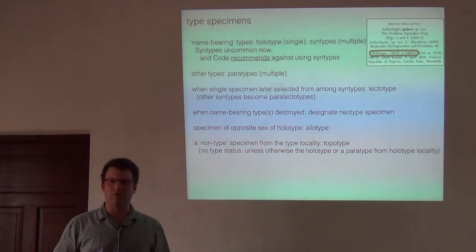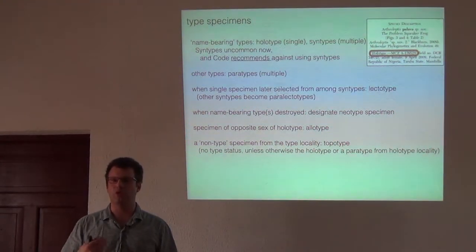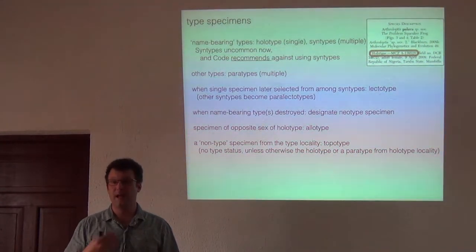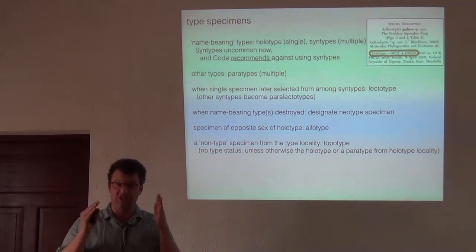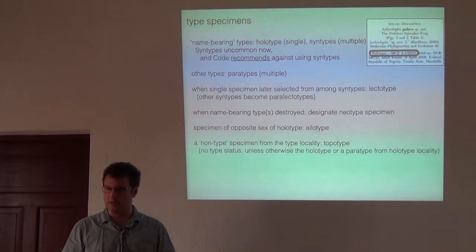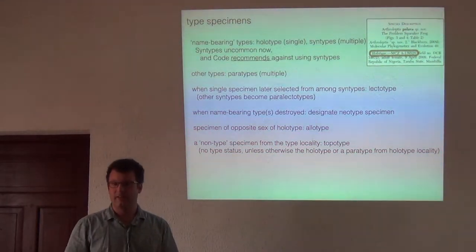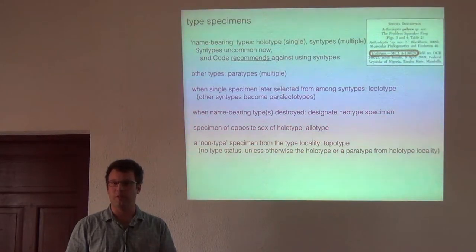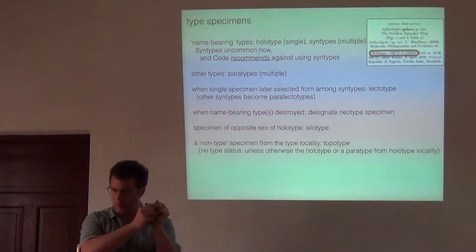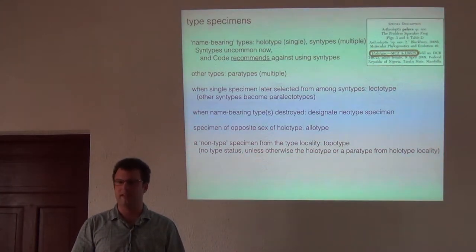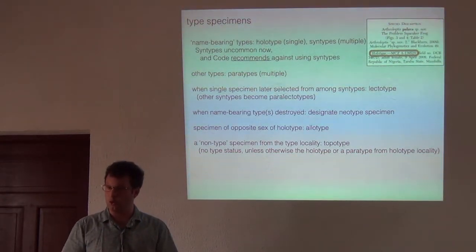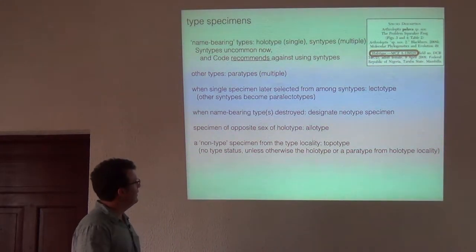Name-bearing types can be replaced, and you have to fix a neotype — a new type specimen that bears the name. Unfortunately this happens frequently because material is simply lost, because collections don't know where their type material is. Sometimes there are terrible cases like the museum in Milan where a bomb during World War II obliterated a lot of the collections. In those cases, species that had type specimens there have to have a new specimen designated for reference.